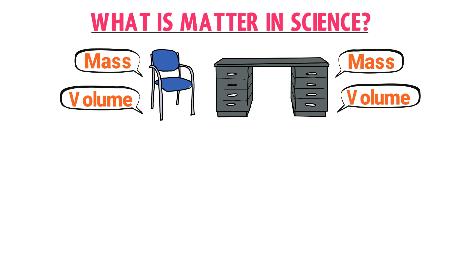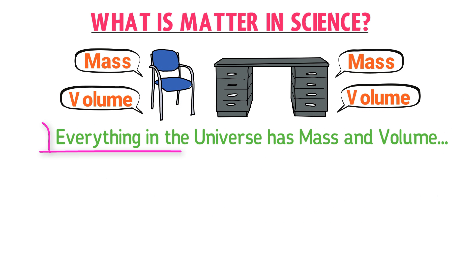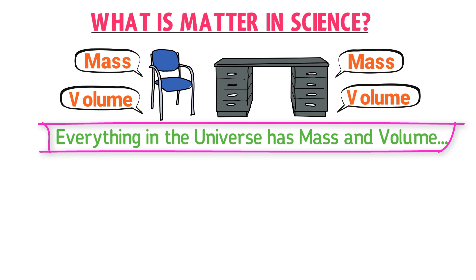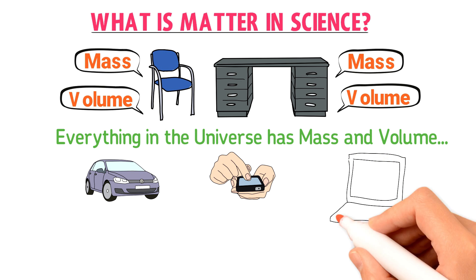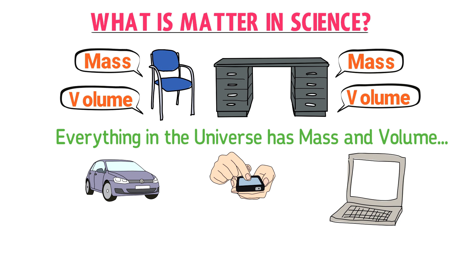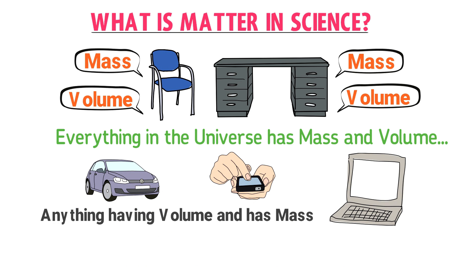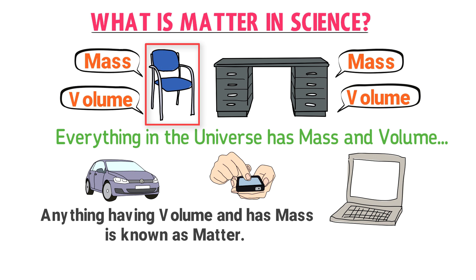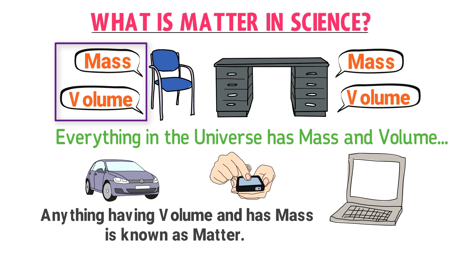According to this example, we can say that everything in the universe has some mass and volume — whether it is a chair, a desk, a car, a cell phone, a computer, etc. They all have masses and volumes. Thus, in science, we define matter as anything or any object occupying some space, meaning having some volume and having some mass, is known as matter. This chair is matter — because it has some mass and volume.